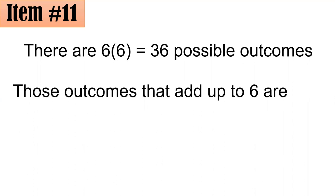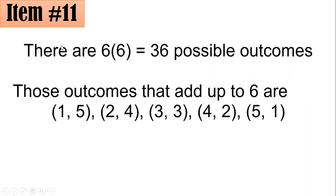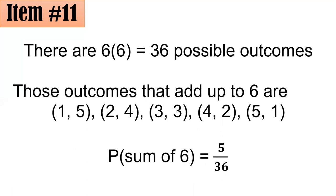The outcomes that add up to 6 are: 1 and 5, 2 and 4, 3 and 3, 4 and 2, and 5 and 1. There are 5 outcomes in all that give a sum of 6, out of 36 total. Hence, the probability of getting a sum of 6 is 5 over 36 — letter A.